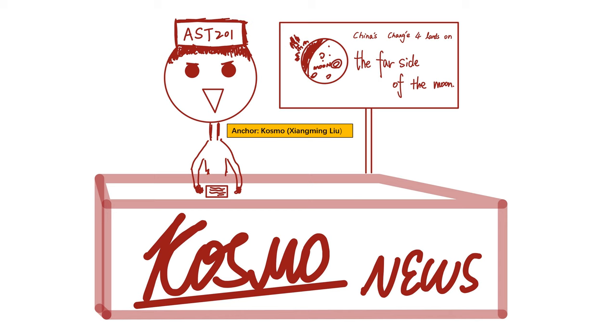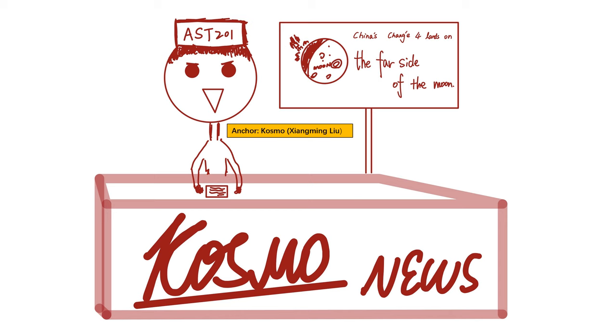China's Chang'e-4 lands on the far side of the moon. On 8th December 2018, China launched a set of spacecraft aiming at exploring history of the moon on its far side.